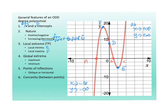For global maxima — in this case, global means it goes on in both positive and negative directions — so you cannot define the global extrema, the global maximum or minimum, in this graph. There is no global maximum or minimum here because the graph goes on and on.